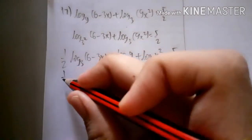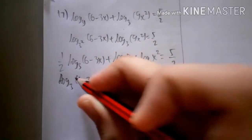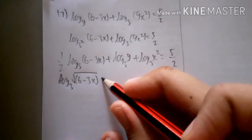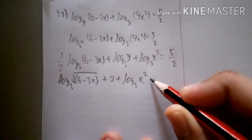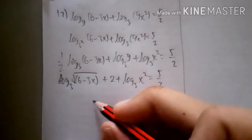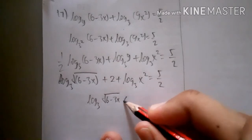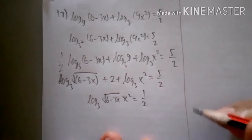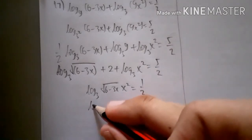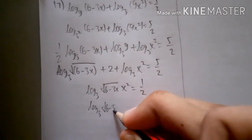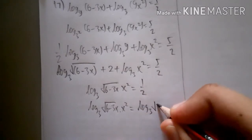Putting the 1/2 back into the argument gives log base 3 of √(6 - 3x) plus log base 3 of x² equals 5/2. Combining: log base 3 of (√(6 - 3x) · x²) = 1/2. This 1/2 on the right becomes log base 3 of √3.